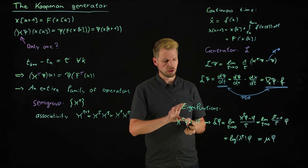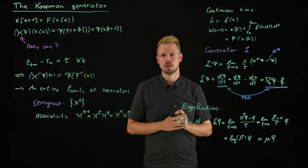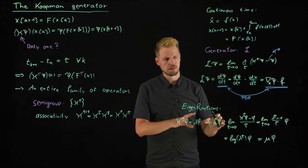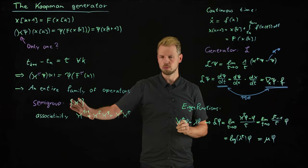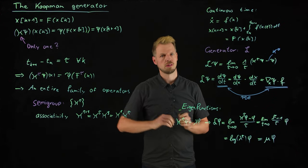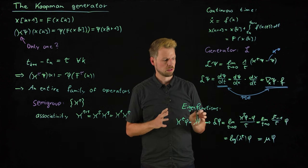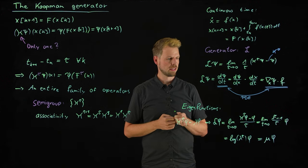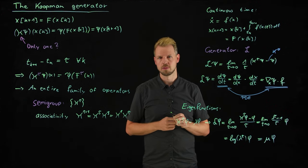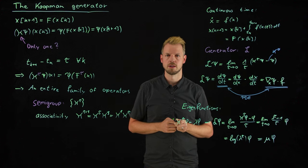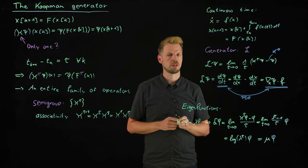We can now try to approximate the generator and learn a lot about the system. And this has quite a few benefits over the Koopman operator. Also has quite a few drawbacks, because what we will see, what we need in the end, is time derivatives of our measurements. And these are sometimes hard to get by. But this is a topic for the next video.